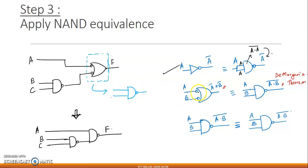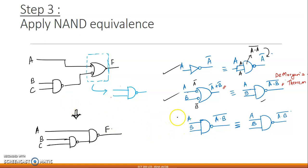For every OR gate with bubbles at the inputs: A through a bubble becomes A̅, and B through a bubble becomes B̅. So the inputs to the OR gate are A̅ and B̅, making the output A̅ + B̅. By De Morgan's theorem, A̅ + B̅ = A·B whole bar, which is our NAND gate. And wherever you see an AND gate with a bubble at the output, that is already a NAND gate — no substitution needed.